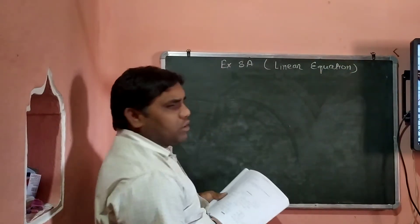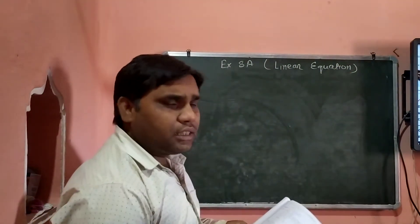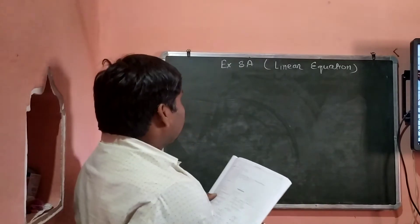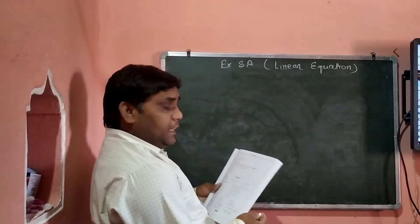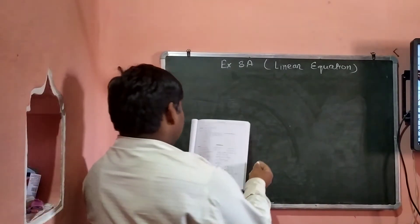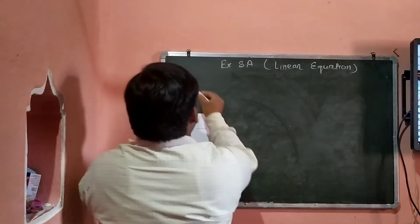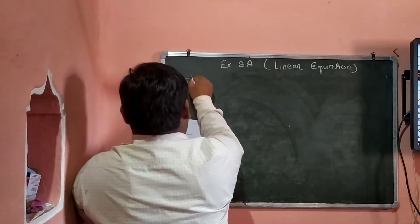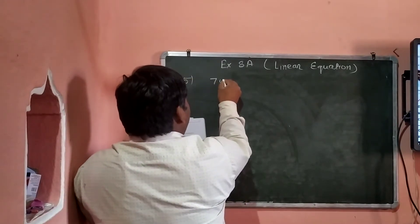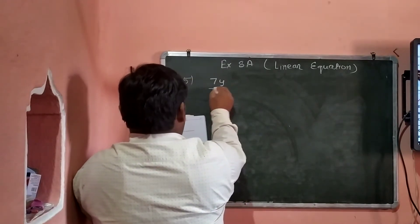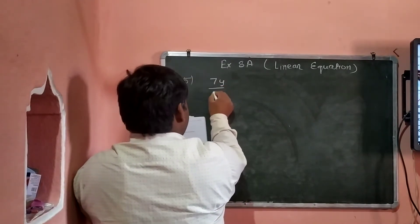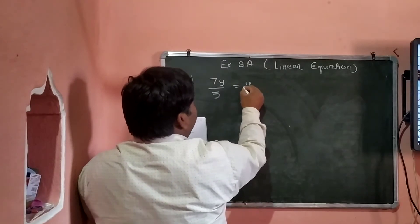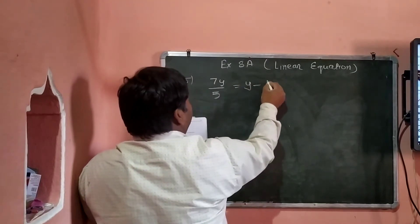Linear Equation SSI 8A. Question No. 5: 7y upon 5 equal to y minus 4.